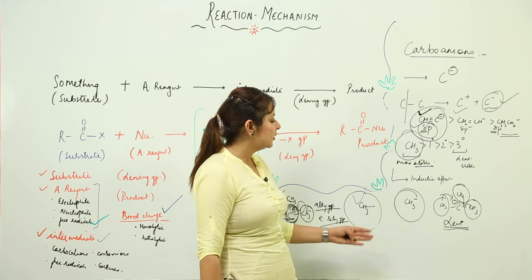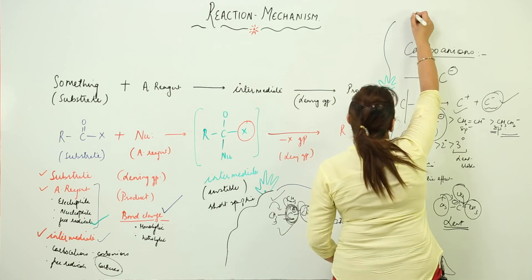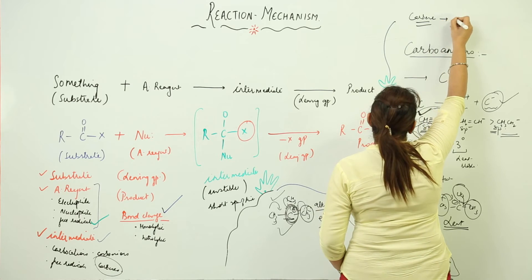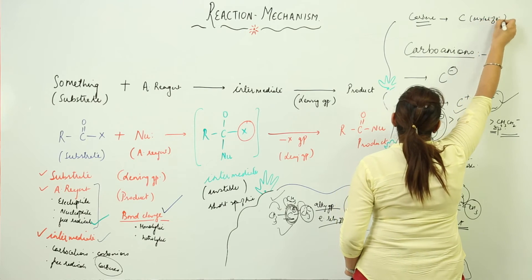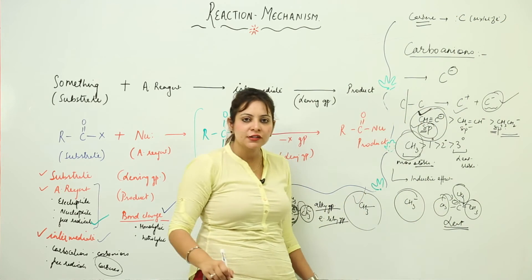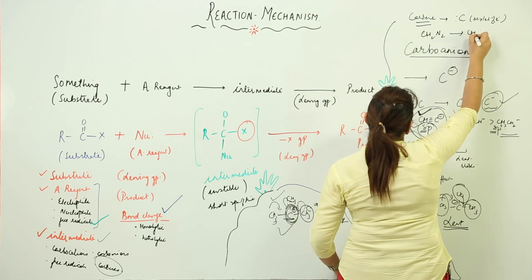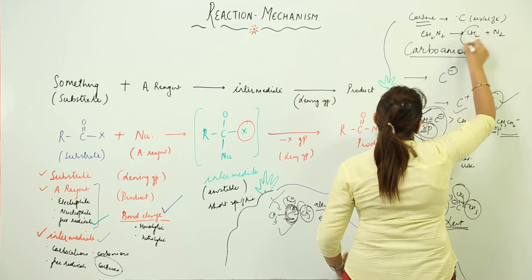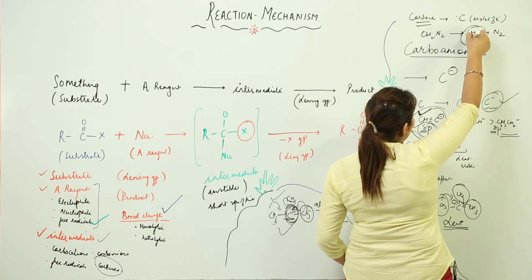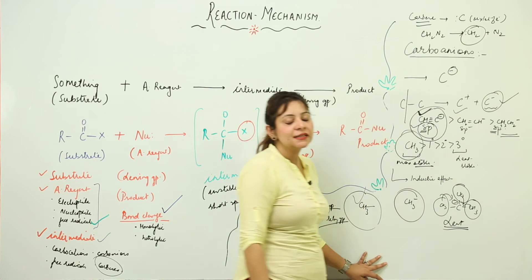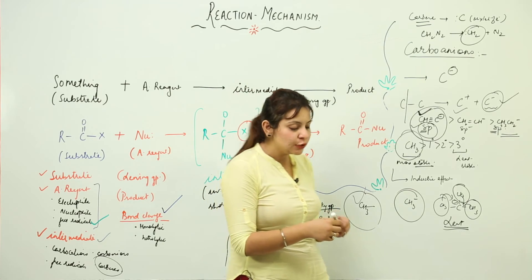Now coming on to the next reactive intermediate — the carbene. What is a carbene? A carbene is an organic species in which the carbon has six electrons in its valence shell. It doesn't have any charge, just six electrons. For example, from CH2N2, it breaks in such a way that we get a carbene. You can see that the carbon is bonded with two hydrogens — four electrons already — and two more, so six electrons total — but it doesn't have any kind of charge on it. That is what is called a carbene.